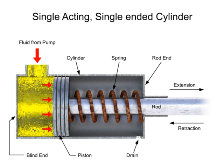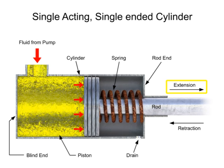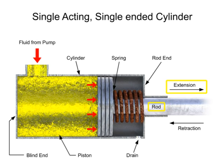When the pressure buildup is large enough, the piston begins to move, extending the rod. This is called the forward stroke.